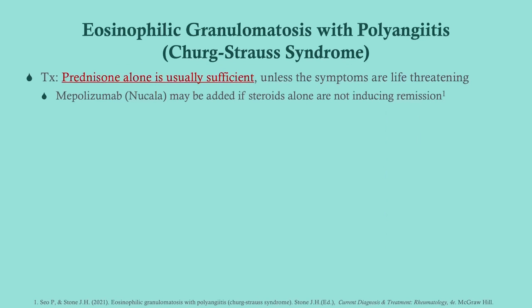Treatment for eosinophilic granulomatosis with polyangiitis (Churg-Strauss / EGPA) is prednisone alone — typically sufficient. If that's not enough, there is a newer drug called mepolizumab (Nucala), but that's unlikely to appear on your exam. For EGPA, just know it's prednisone alone.